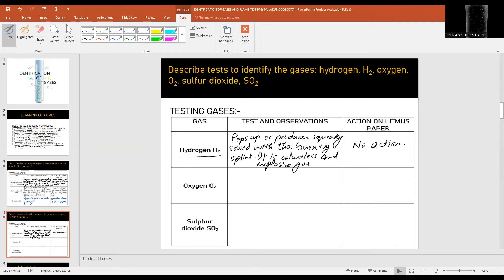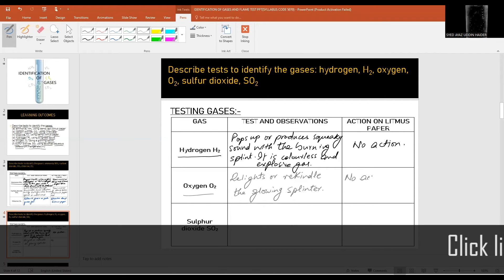Oxygen gas O2: relights or rekindles a glowing splint or matchstick. Again, it has no action on the litmus paper.